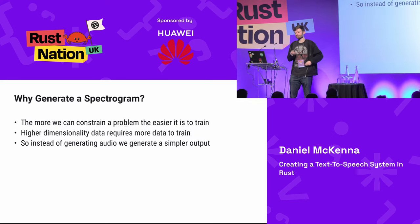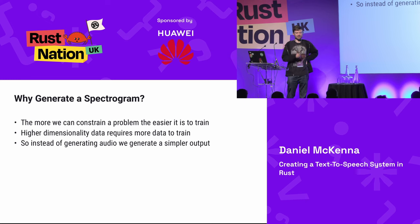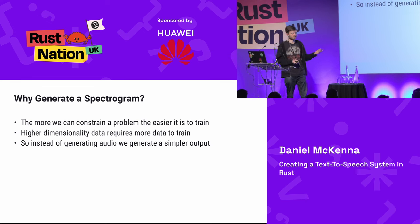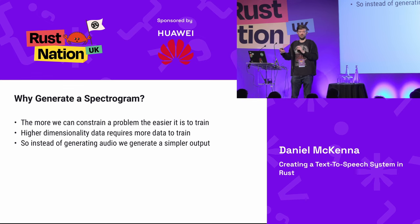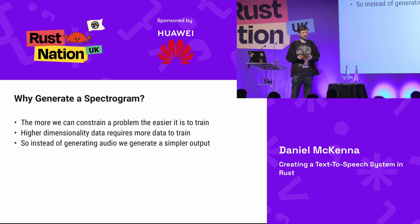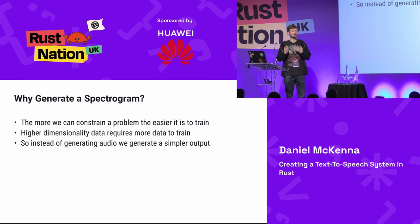Why do we generate a spectrogram instead of audio directly? The more you constrain a problem, the easier it is to train a neural network and the less data you need. A spectrogram is an incredibly compressed representation of audio — we've quantized it on the time scale (say 0.01 seconds a frame) and on frequencies. This massively reduces data, gives the neural network an easier structure to learn, and requires less training data. This is part of the skills of data science: figuring out how to guide the model through architecture or data engineering.